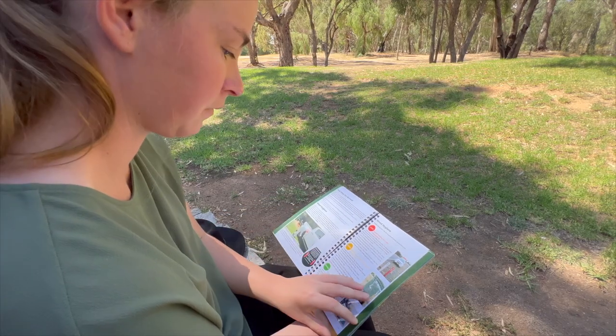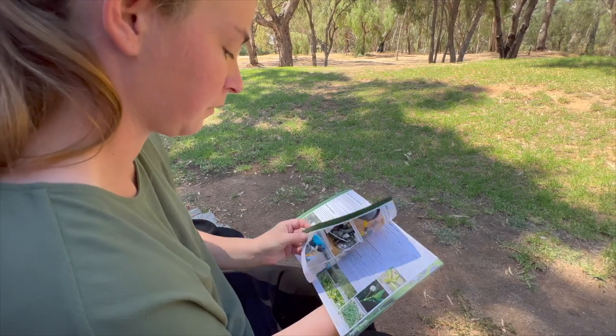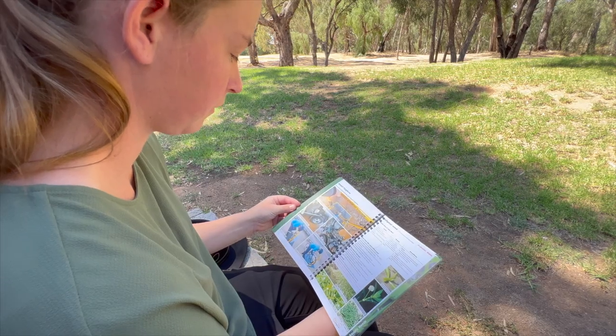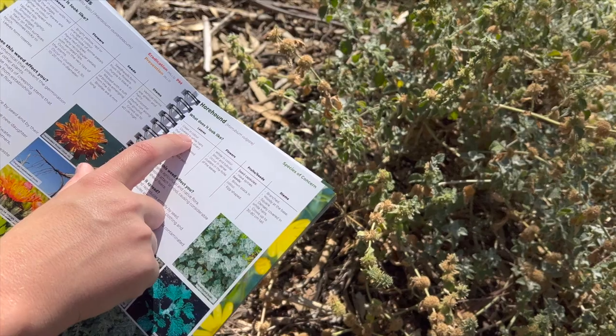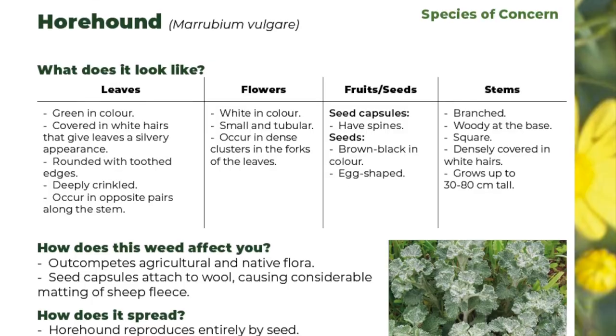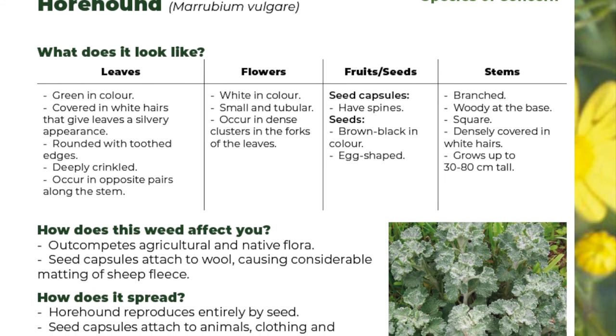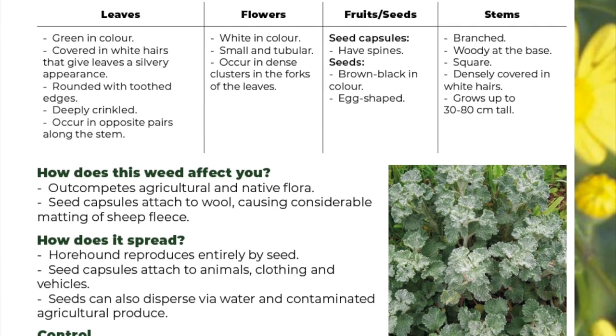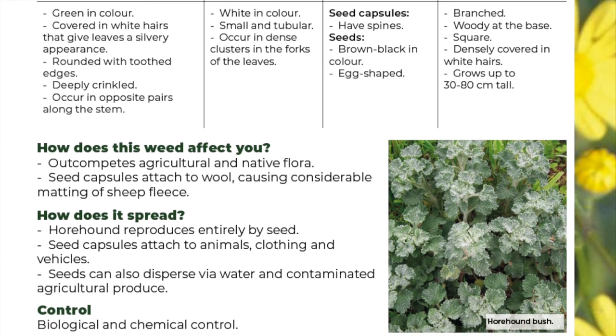The weed identification pages begin on page 21 and have been designed to provide all of the necessary information to identify your weed, find out how it can impact you, how it spreads and how to control it.